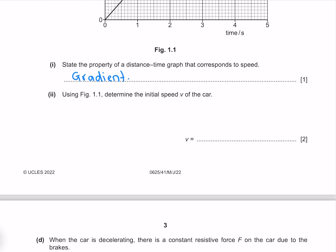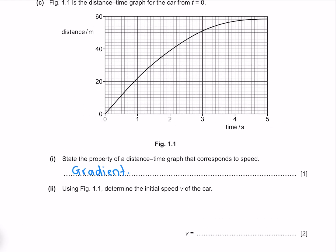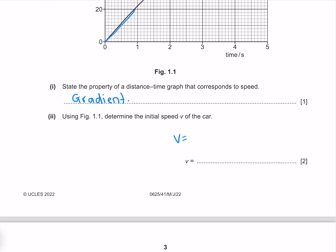Using figure 1.1 determine the initial speed v of the car. We can observe a constant gradient in this section here. Knowing that our velocity is the change in distance divided by time, where our distance is 20 and our time is 0.9, which gives me 22.2 meters per second to 3 significant figures.